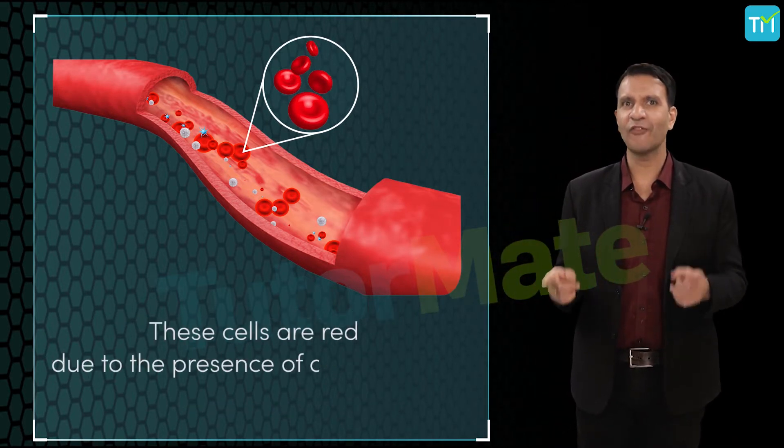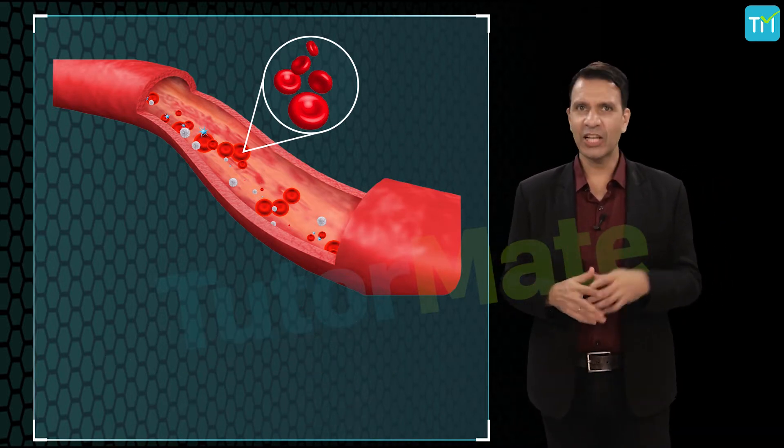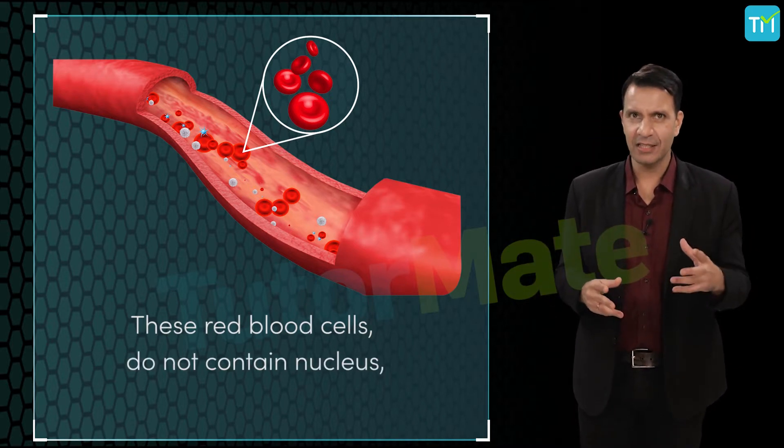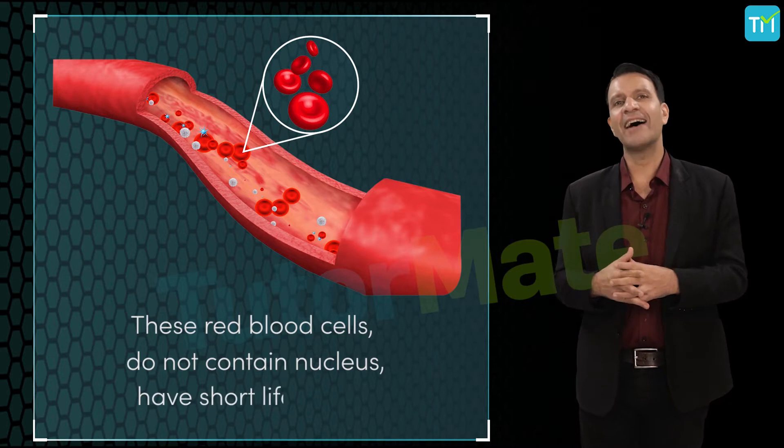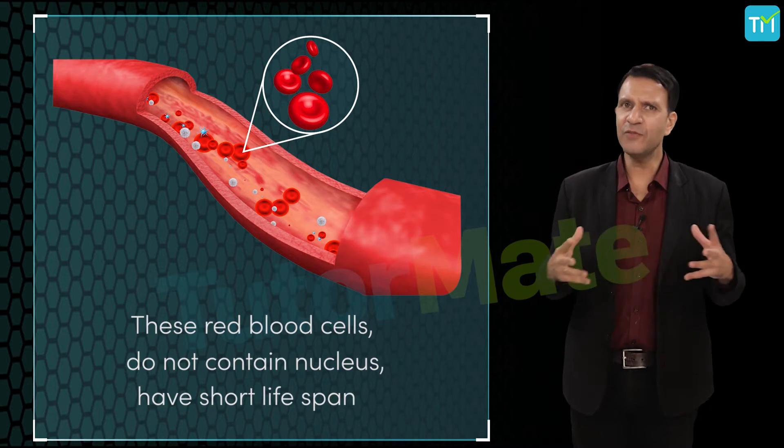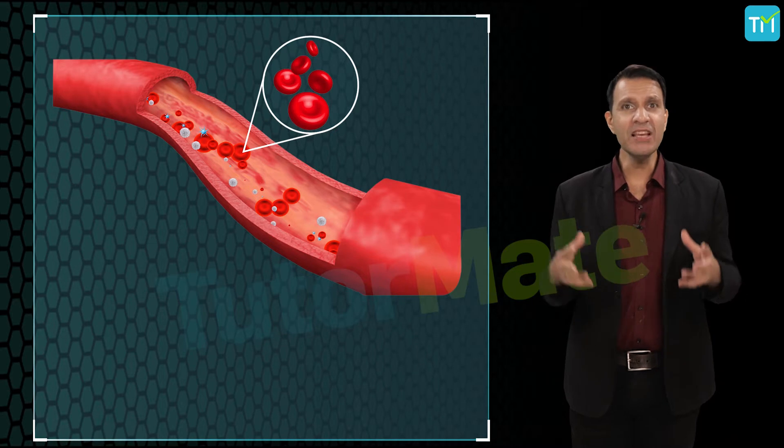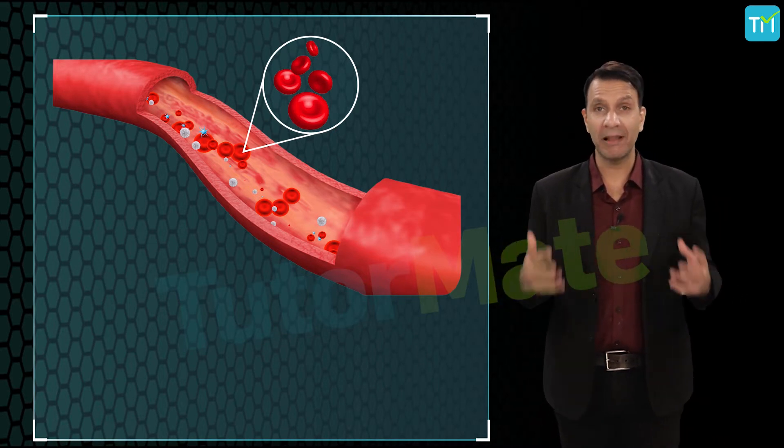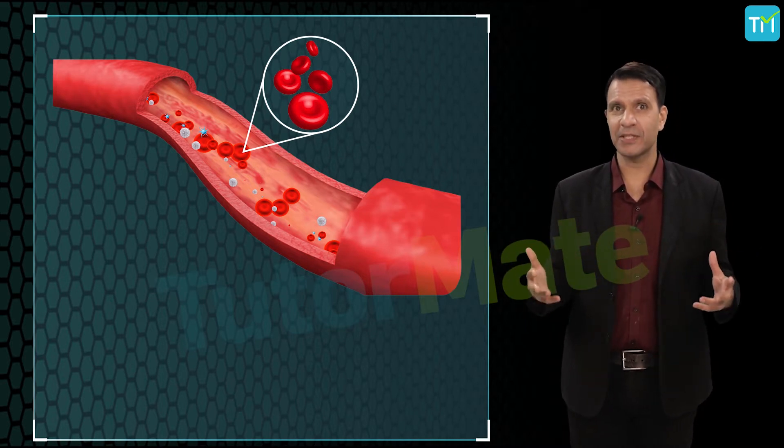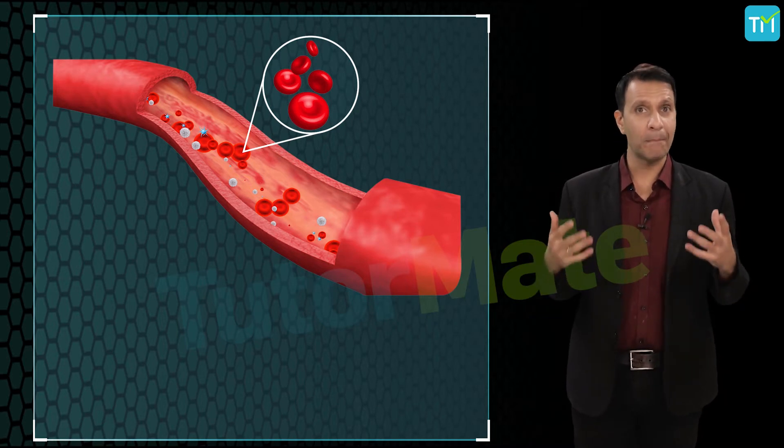Now these red blood cells do not contain a nucleus. This is the reason why red blood cells have a short life span. Each red blood cell lives for about four months. It is estimated that about three million red blood cells of the human blood die every day. About four times that number of new red blood cells are generated by our bone marrow every day too. Fascinating, isn't it?